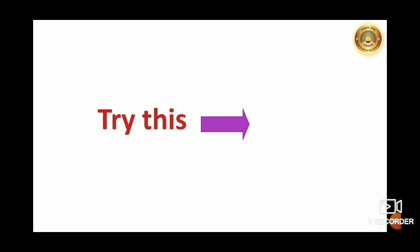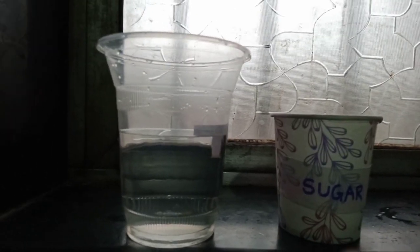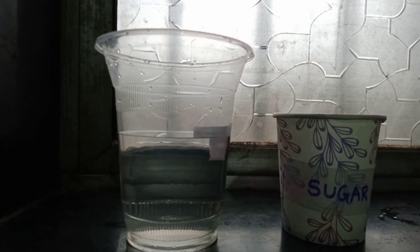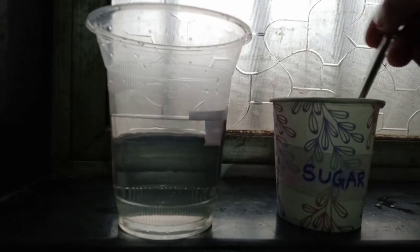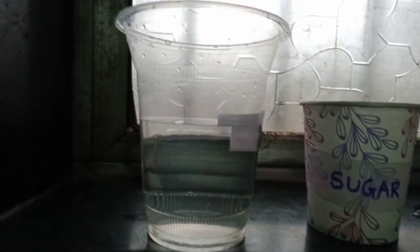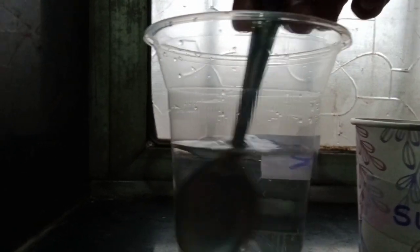Students, now there is one activity for you, which you have to perform at your home and make some observations. Take a glass of water. Add 1 teaspoon of sugar into the water and stir it.